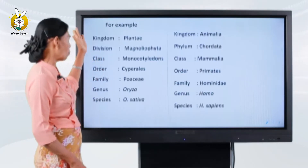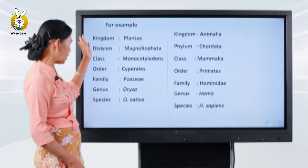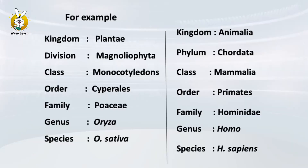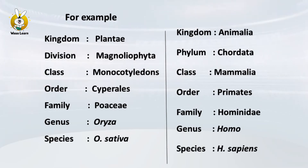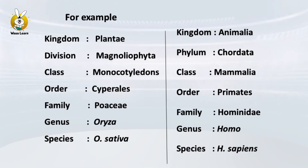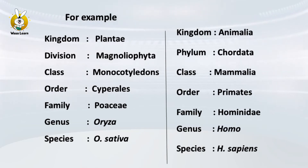This classification will be used as a test example for our group. For Oryza sativa, the classification is as follows: Kingdom — Plantae; Division — Magnoliophyta; Class — Monocotyledons; Order — Cyperales; Family — Poaceae; Genus — Oryza; Species — Oryza sativa.